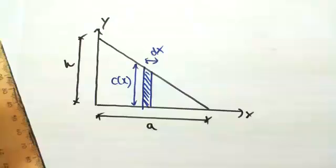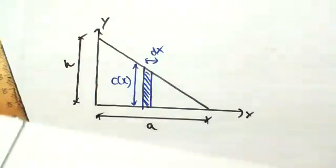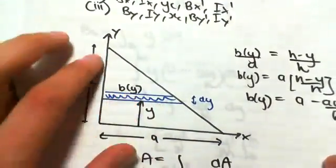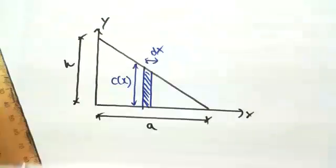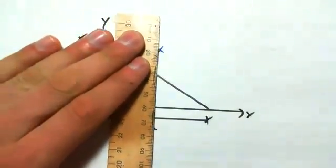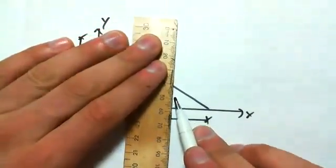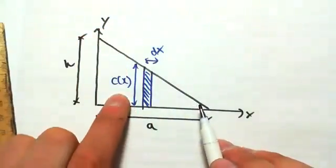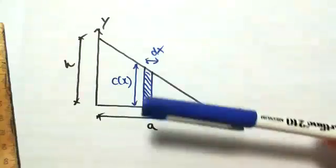These strips have a thickness dx, and they have a height, some function of x. So just like the horizontal strips had some length function of y, because as you move up the y axis, the length will change. This one as well, as you move down x, the length will change. So we have some function c of x, and a thickness dx.